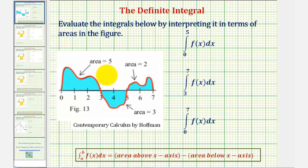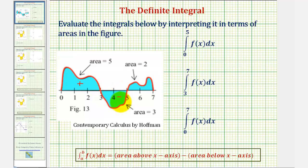Looking at our diagram, notice on the interval from zero to three, the area is above the x-axis, so the definite integral would be positive. On the interval from three to five, the area is below the x-axis, so the definite integral would be negative over this interval. And then on the interval from five to seven, the area is above the x-axis, so the definite integral would be positive.